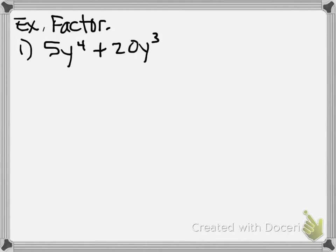So what you need to do is you need to look at the coefficients and see if there's anything that 5 and 20 have in common. They have a 5. So that's where we begin. Then you're going to look at your variables. This is where it gets tricky. We need to look for a variable that they have that's the same, and then we also have to look at an exponent that they have that would be the same.